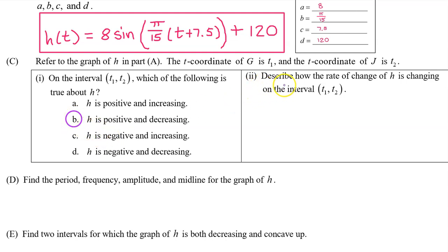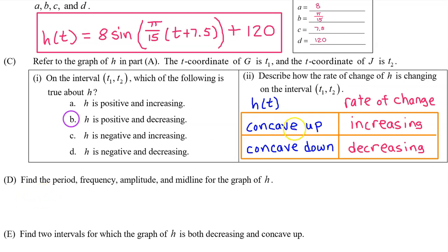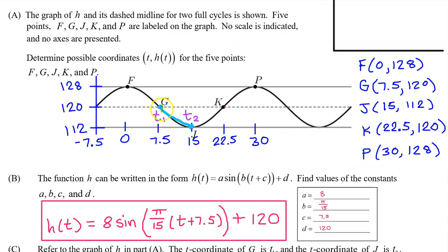Part 2. Describe how the rate of change of h is changing on the interval from t₁ to t₂. In unit 1, we learn that wherever h(t) is concave up, the rate of change is increasing. And wherever h(t) is concave down, the rate of change is decreasing. We can see that h(t) is concave up on this interval, therefore the rate of change is increasing.